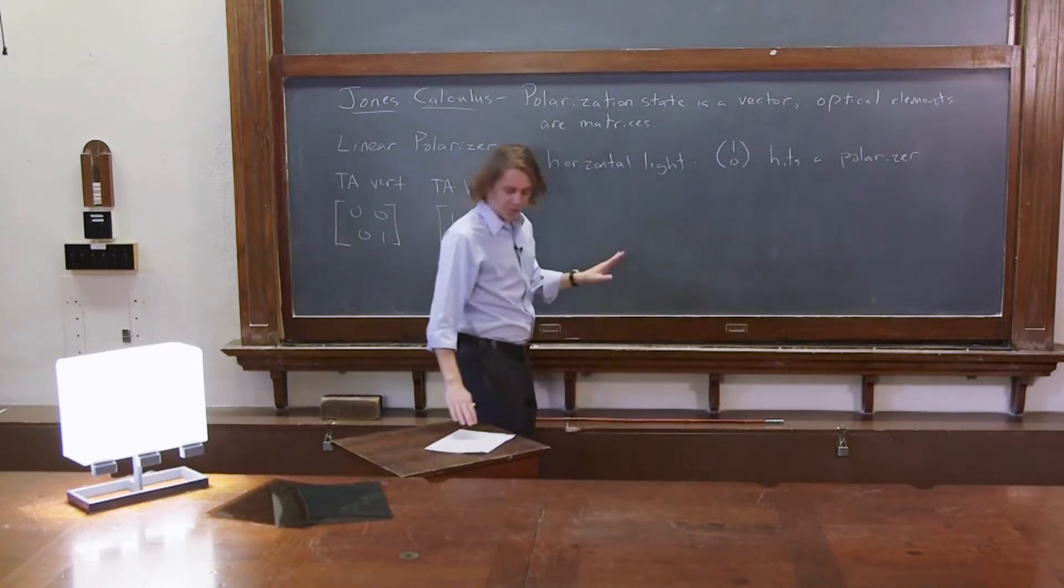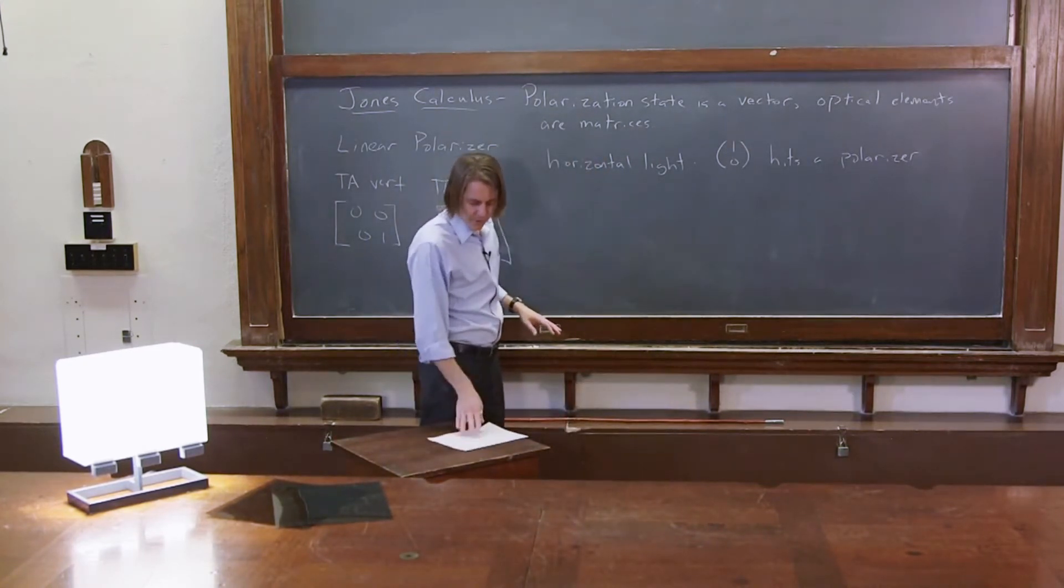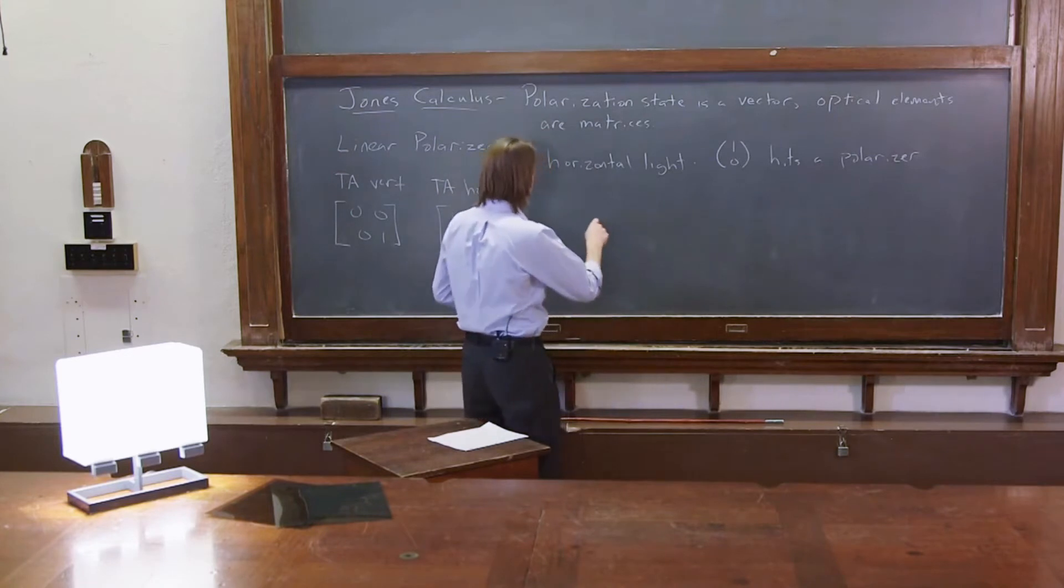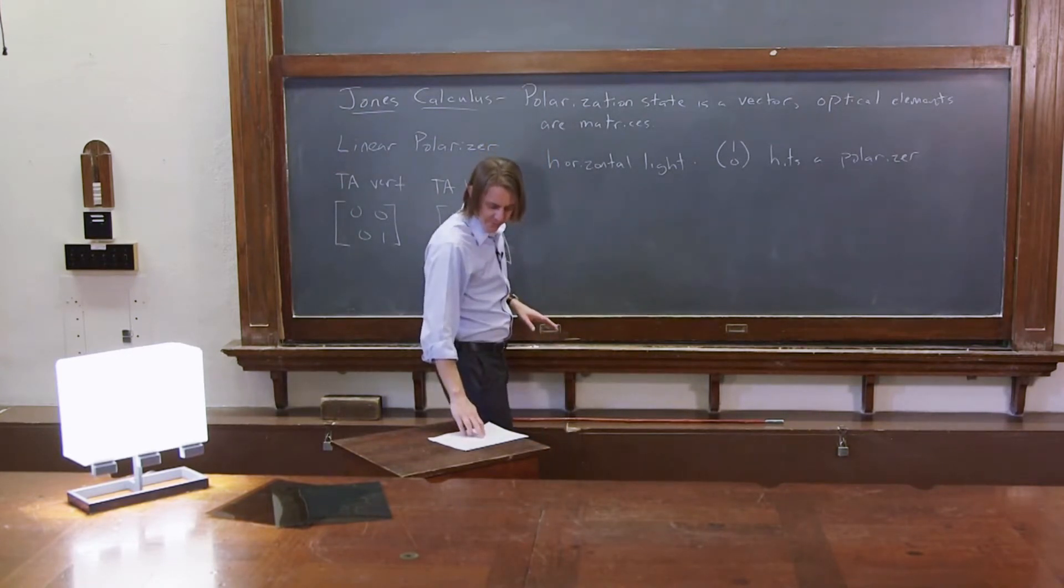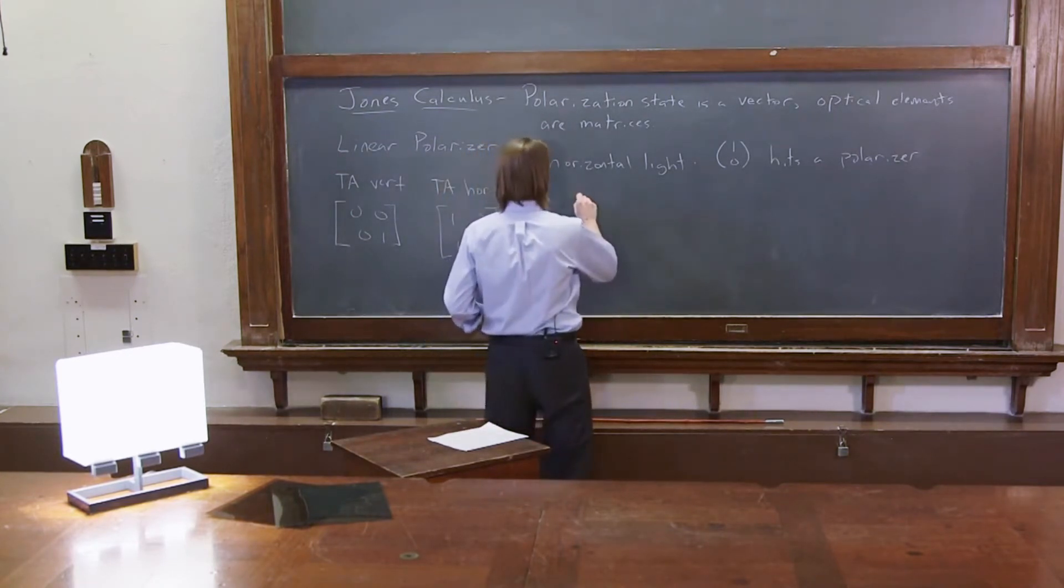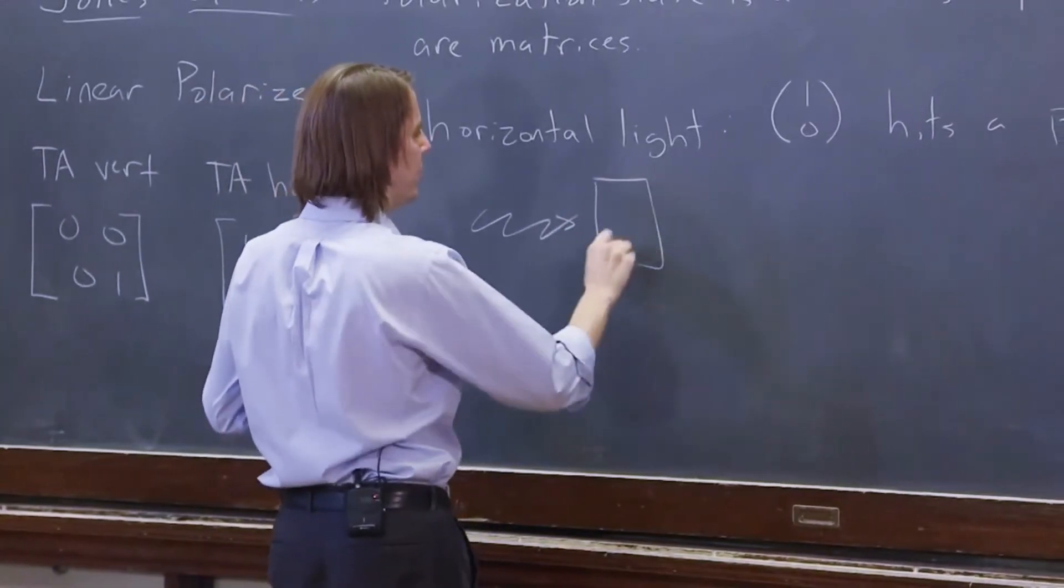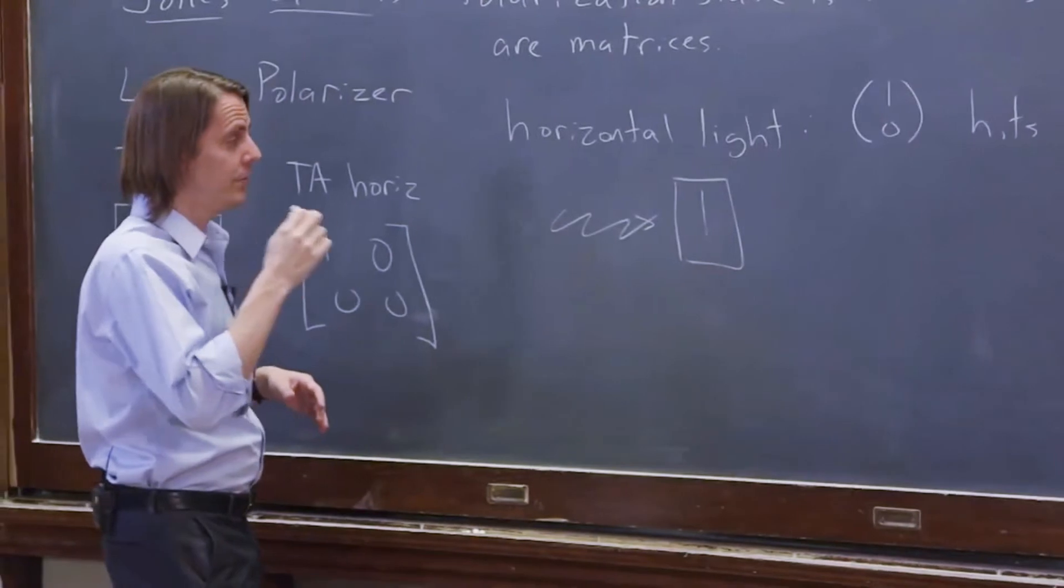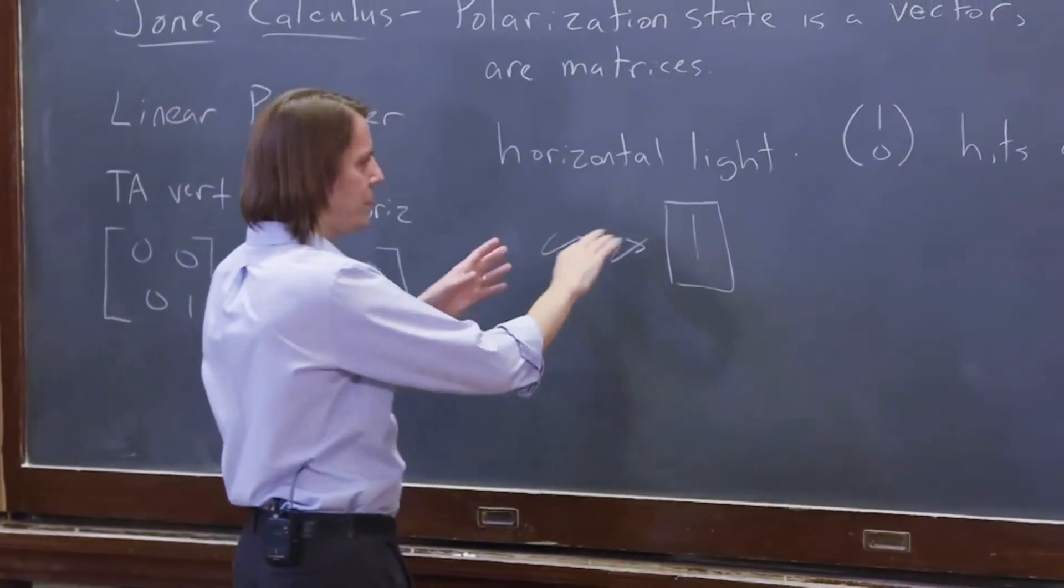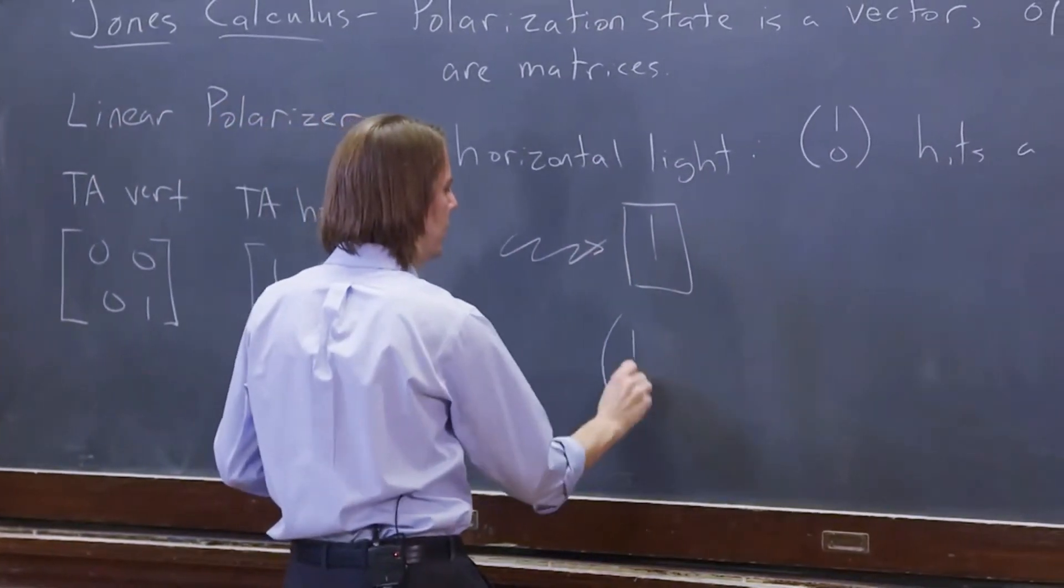Horizontal light hits 1, 0. First, let's do the case of horizontal light hitting a polarizer that's vertical, TA vertical. That means first you write the state of the light, 1, 0.